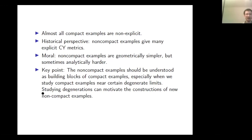For the purpose of this talk, we take a slightly different viewpoint: the key message is that non-compact examples really should be understood as the building blocks of the compact examples, especially when studying compact examples near certain degenerate limits. In differential geometry, a common technique is gluing constructions — if you have more basic objects, you can build more complicated objects by some implicit function theorem argument. In usual gluing problems, you already understand the building blocks and try to construct new examples. But today we reverse this viewpoint: by thinking about what the more complicated compact examples might be, we can motivate the construction of these building blocks.